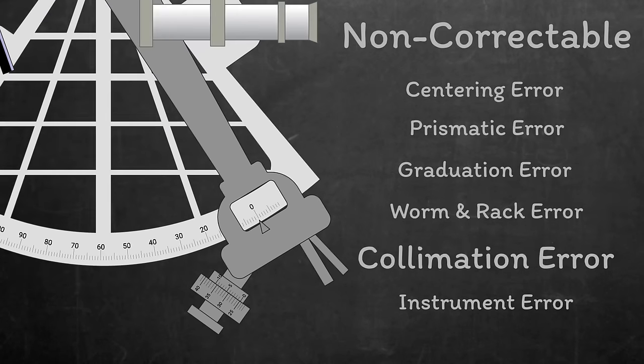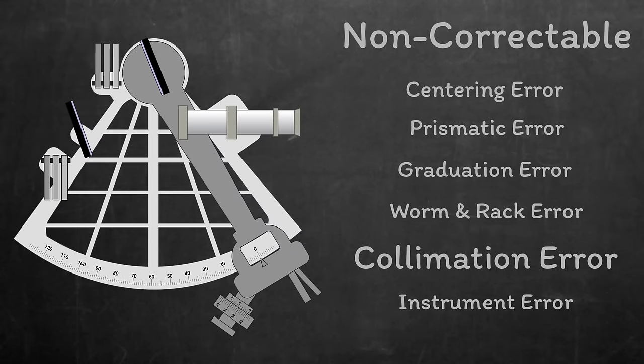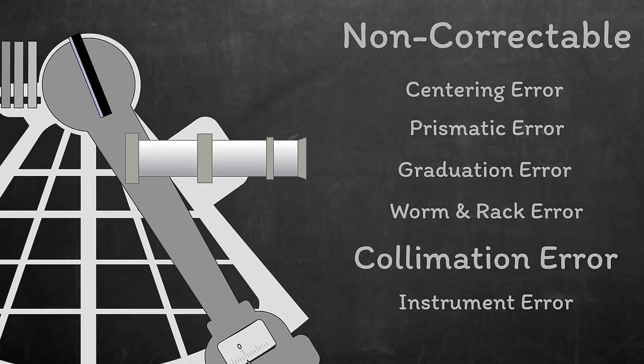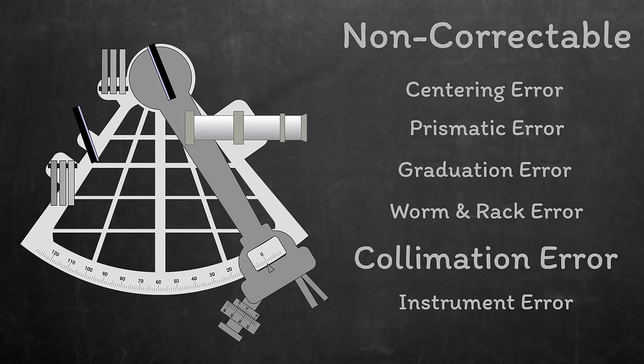And collimation error, this is that one that was correctable on older sextants. It's caused when the axis of the telescope is not perfectly perpendicular to the plane of the instrument. Nowadays the telescope is normally rigidly fixed to the frame, so it's not actually possible to correct.